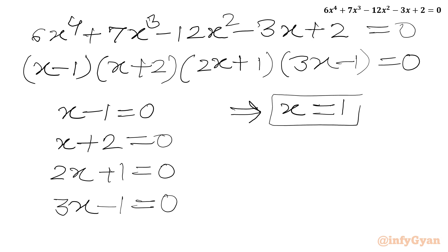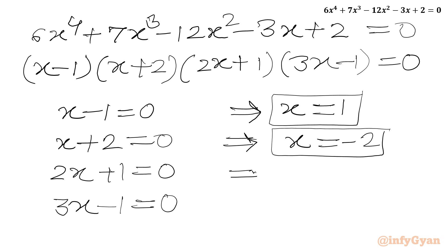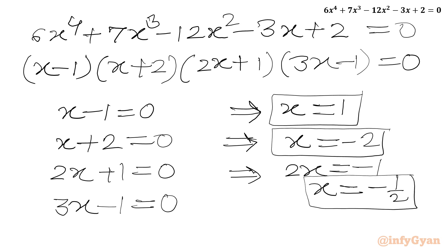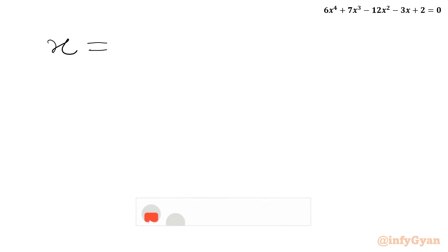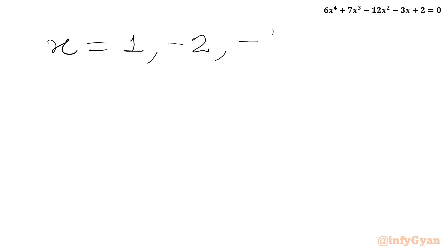From the first equation x=1 is our first solution. From the second equation x=−2. From the third equation 2x=−1, so x=−½. From the last equation 3x=1, so x=⅓. Overall, four real solutions are: x=1, x=−2, x=−½, and x=⅓.